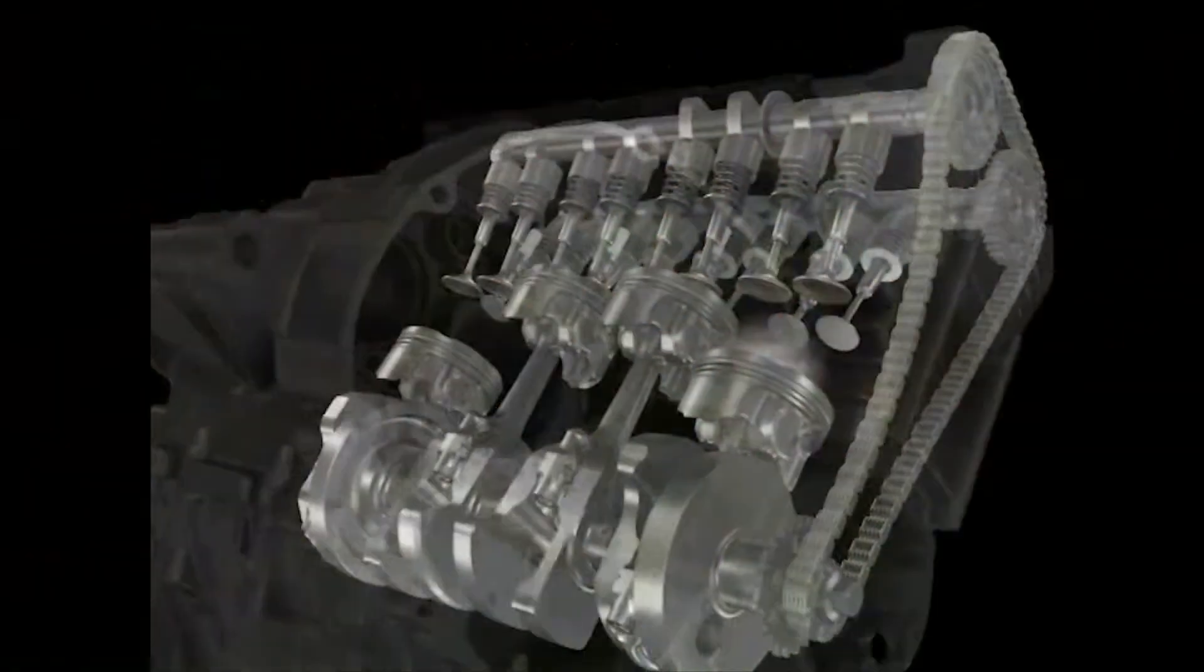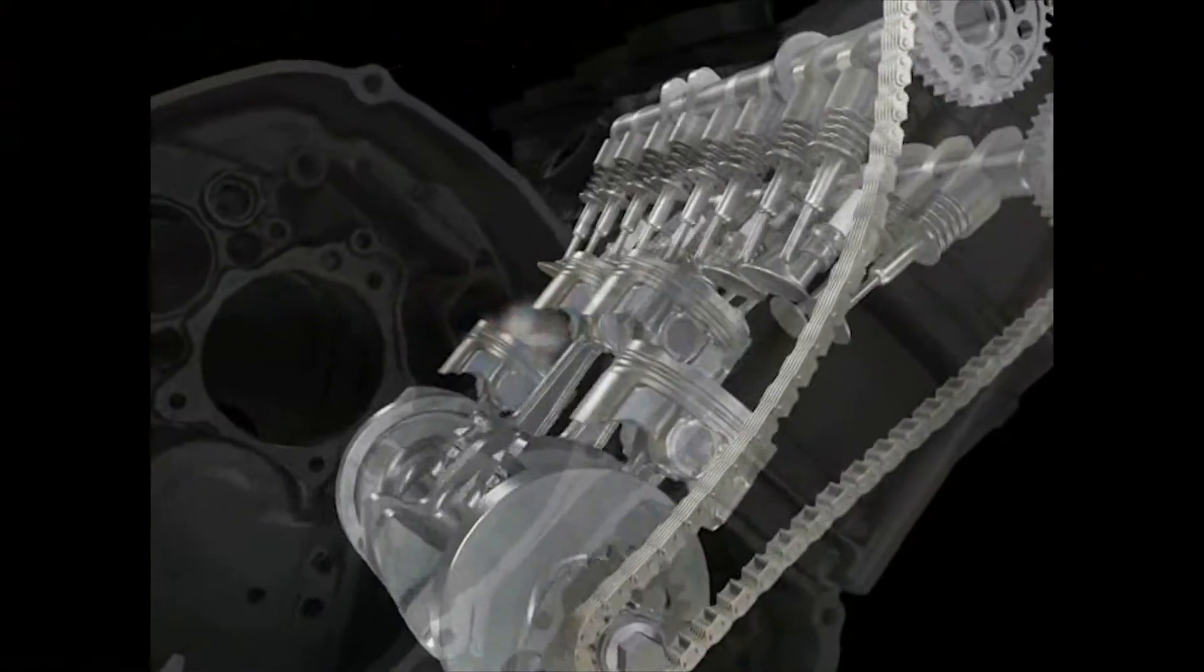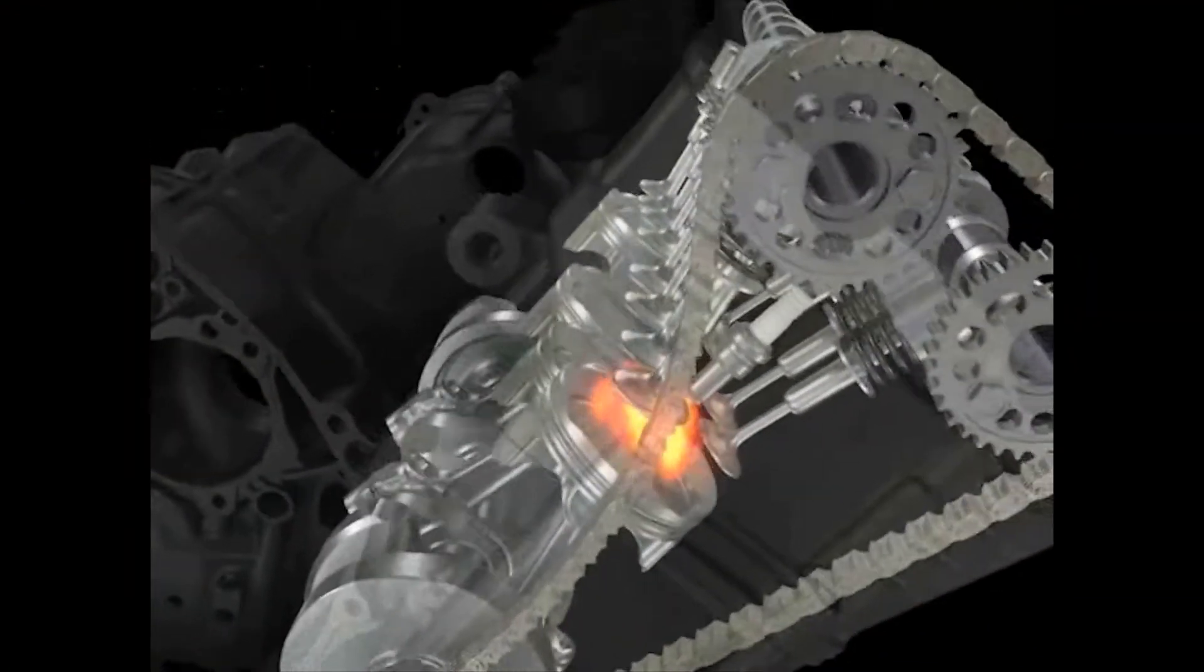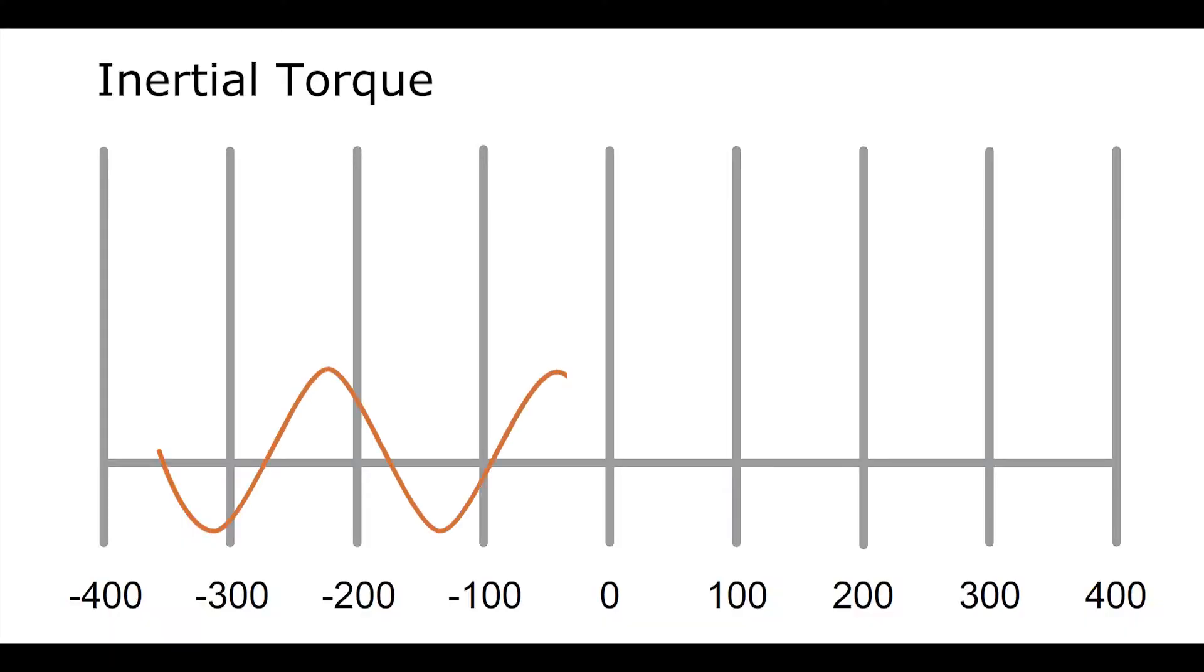When the pistons, connecting rods, and crankshaft turn, their weight and mass tend to keep these parts rotating even after the power stroke is complete. This is inertia, and the second type of torque is referred to as inertial torque.